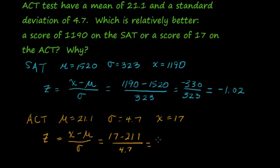That difference was negative 4.1. When we divide, we get negative 0.87, rounding to two decimal places as we do for z-scores.